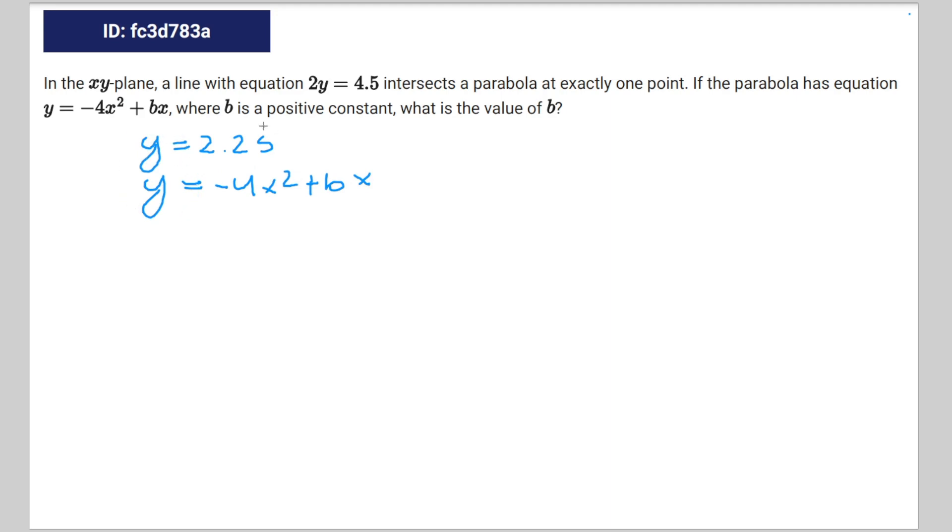Since these are both equal to y, you can set these equations equal to each other: 2.25 equals negative 4x squared plus bx. Subtract 2.25 from both sides, you get 0 equals negative 4x squared plus bx minus 2.25.